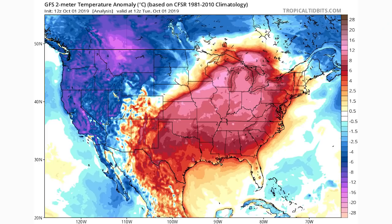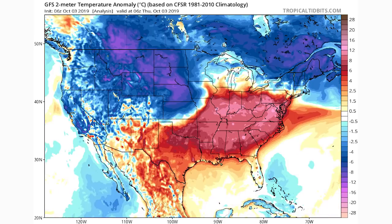Now let's look at the temperature anomalies from the GFS. I'll also show the GEFS ensemble and the European ensemble toward the end for different model perspectives. On October 1st, there's a big ridge for the eastern United States and a big trough for the west. By the 3rd, that trough has moved further east, and northern regions like Michigan, Wisconsin, New England, Nebraska, Kansas, and Iowa have cooled down noticeably, while very cold conditions persist for the Rocky Mountains.